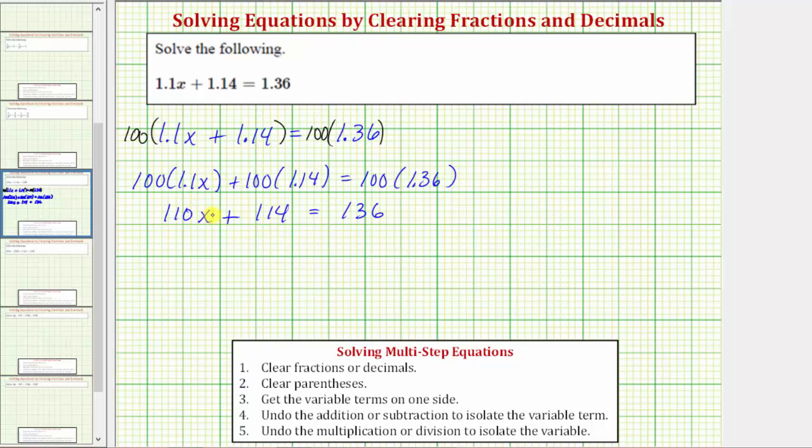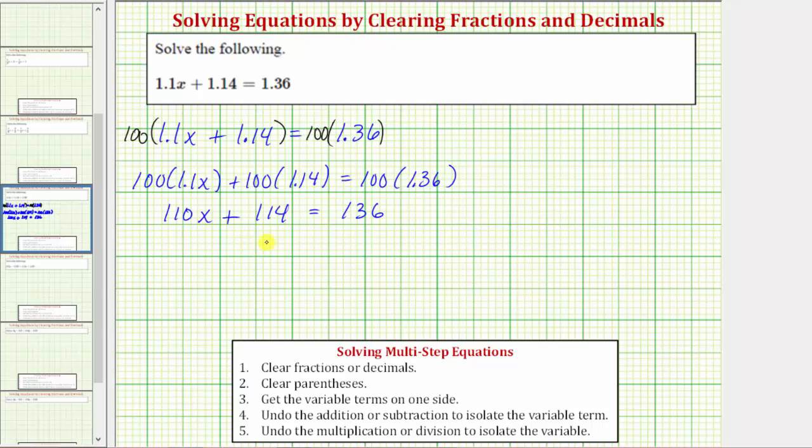The next step is to isolate the variable term by adding or subtracting. Because we don't want this plus 114, we need to perform the inverse operation. To undo plus 114, we subtract 114 on both sides of the equation.